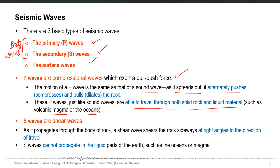S waves, or shear waves or secondary waves, as they propagate through the body of rock, shear the rock sideways at right angles to the direction of travel. For P waves, the motion of the particles or rock is parallel to the direction of wave propagation. But for S waves, the motion of the rock is perpendicular to the direction of the wave. S waves cannot propagate in liquid parts of the earth such as oceans or magma — they can only propagate through solid rocks.